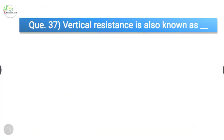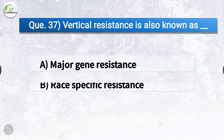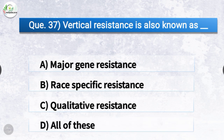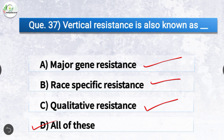Question number thirty-seven: Vertical resistance is also known as dash. The options are major gene resistance, race-specific resistance, qualitative resistance, or all of these. The correct answer is option D, all of these. Vertical resistance is also known as major gene resistance, race-specific resistance, and qualitative resistance.